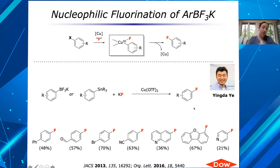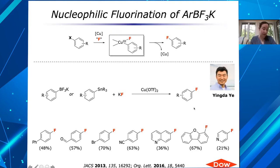The challenge for the specific project we're working on is that these are process agrochemists, and at the scales they're working on, crown ethers are too expensive. The crown ether is still pretty expensive, so that's not the approach we used — only because of the cost of the crown ethers themselves.